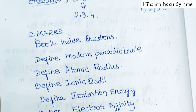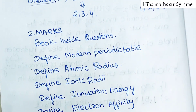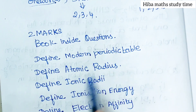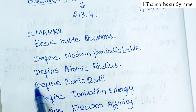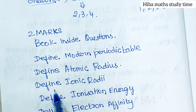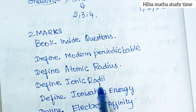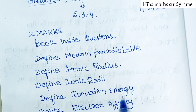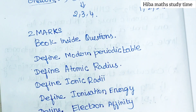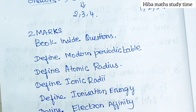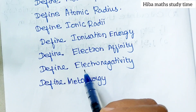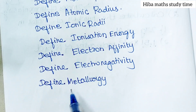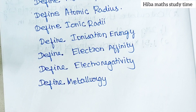Book inside, two more questions. Define modern periodic table, define atomic radius, define ionic radius, define ionization energy, define electron affinity, define electronegativity, define metallurgy.